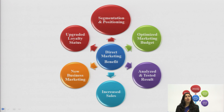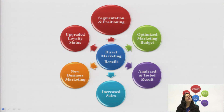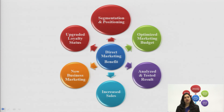Upgraded loyalty status — old satisfied customers can become your loyal customers. If a customer is getting a customized product at a lower price, the satisfied customer will become a loyal customer. Upgraded loyal status is maintained through CRM. When there is a strong CRM in direct marketing, it converts into profit and sales. That is why the most important benefit of direct marketing is the upgraded loyalty status.